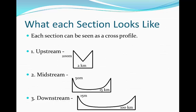Now, if you're going to do the task where you write down why each section changes, I would also write why you think each section looks the way it does. For example, the downstream probably looks much flatter because there's going to be more lateral erosion due to more tributaries moving into the water.